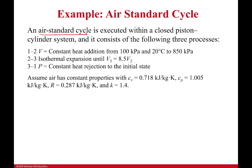It consists of the following three processes. From 1 to 2, volume is constant. From 2 to 3, we have isothermal expansion. And from 3 to 1, pressure is constant. 1 to 2 is where we have our heat addition. 3 to 1 is where we have our heat rejection. And a key detail here: when it expands, it's now eight and a half times what it was originally.